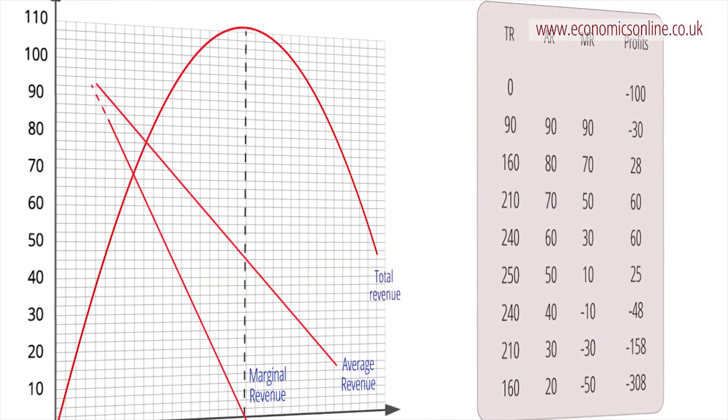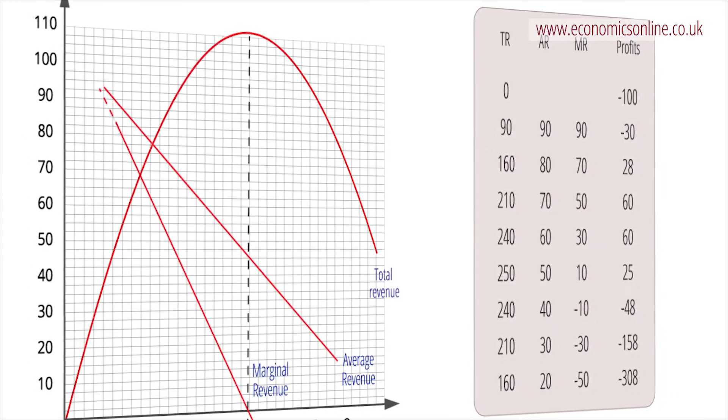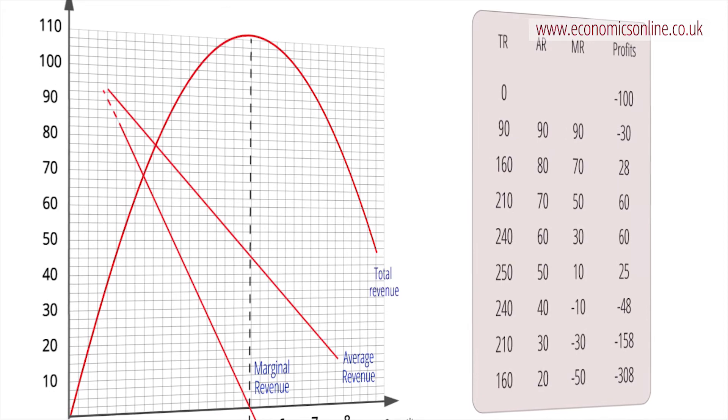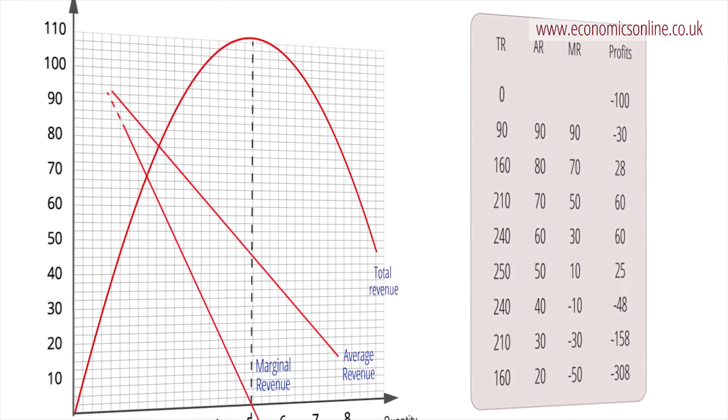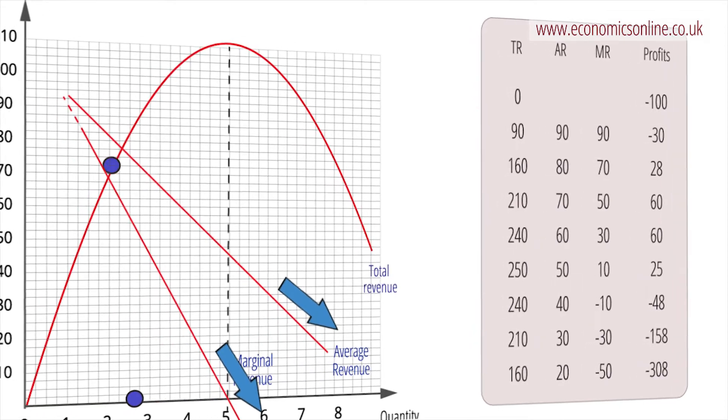As output increases, both the average and marginal revenue curve slopes downwards, but the marginal slopes down at twice the rate of the average. Total revenue is maximised when marginal revenue is zero.